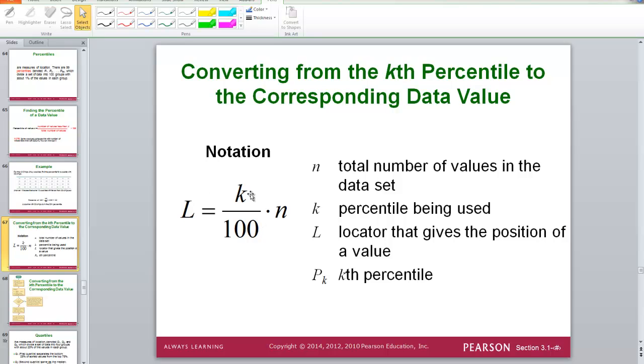So this formula tells us if we are given a quartile, we are given a percentile that we are trying to find and we know how big our sample set is then we can solve for the locator, the position, which number in our set of data. Is it the 5th number, is it the 12th number, is it the 47th number? It tells us where to look for the quartile. So then we can say what the value of the quartile is.